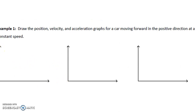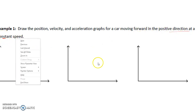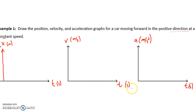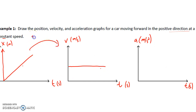Here's a question where we draw position, velocity, and acceleration graphs for a car moving forward in the positive direction at constant speed. Constant speed means a horizontal line on the velocity-time graph — velocity is not changing. For the position graph, the slope would be constant. For acceleration, we ask what's the slope of the velocity line — the slope is zero, so there's no acceleration. That makes sense: we're not changing velocity in any way.